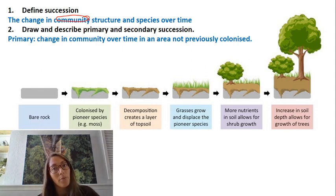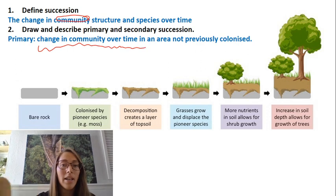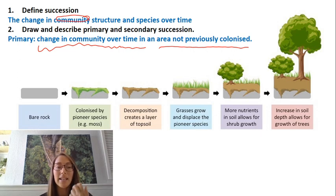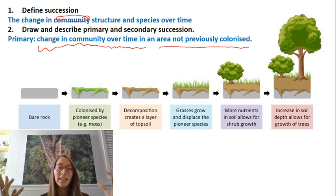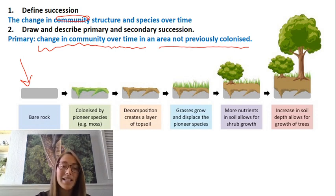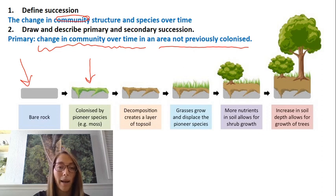We're going to talk through an example of primary succession. Primary succession is a changing community over time, but what makes it primary is that it occurs on an area that was not previously colonised. Imagine a brand new island created from volcanic eruptions — here we've got bare rock. The first thing that happens is pioneer species come and inhabit that bare rock, things like lichen and mosses that don't need soil and can live directly on it.